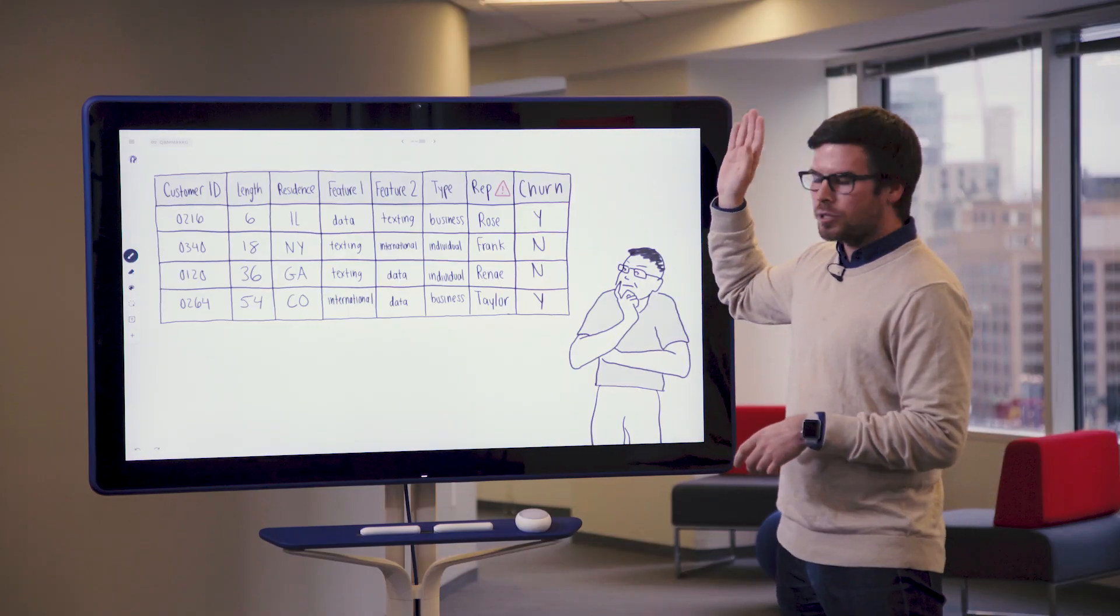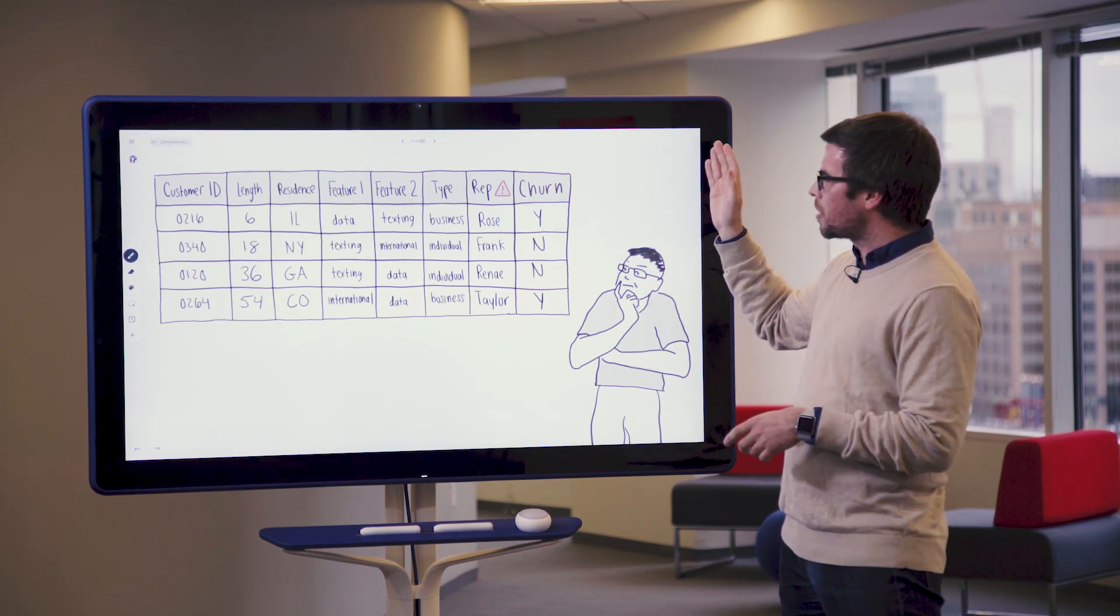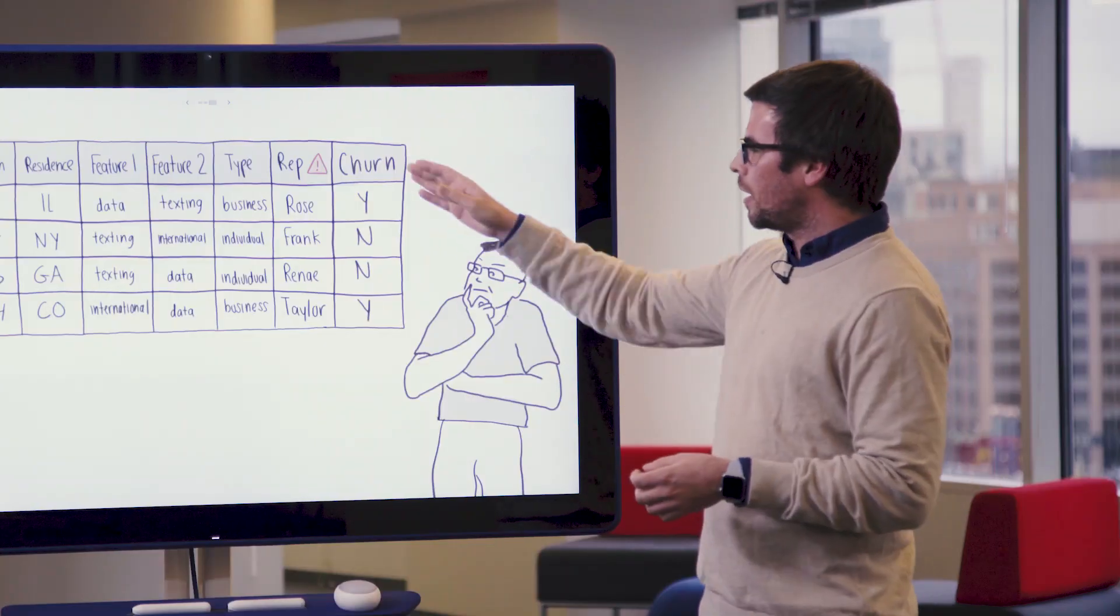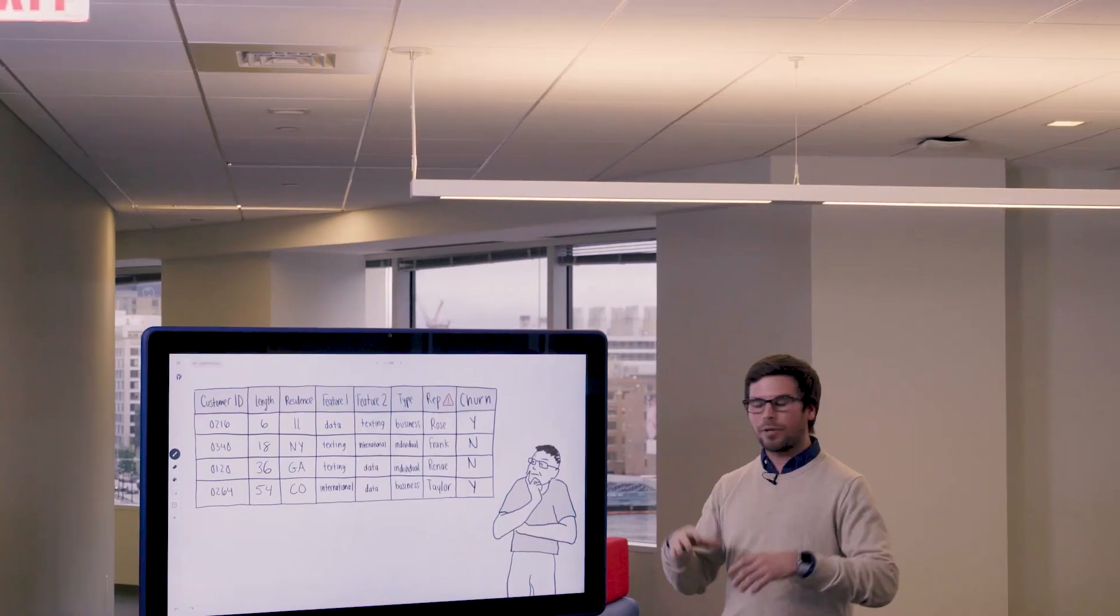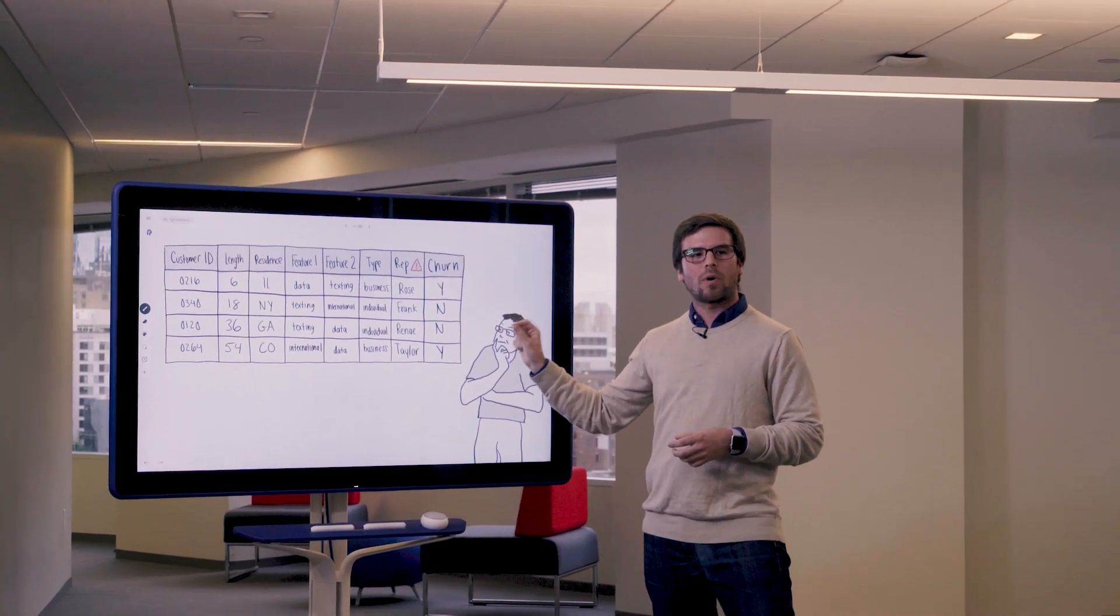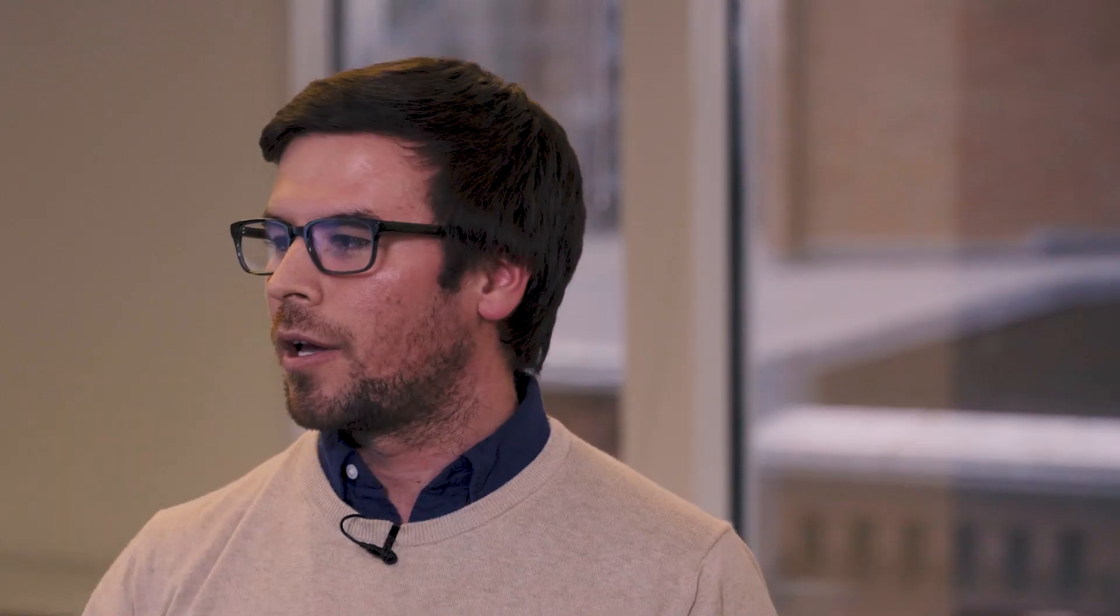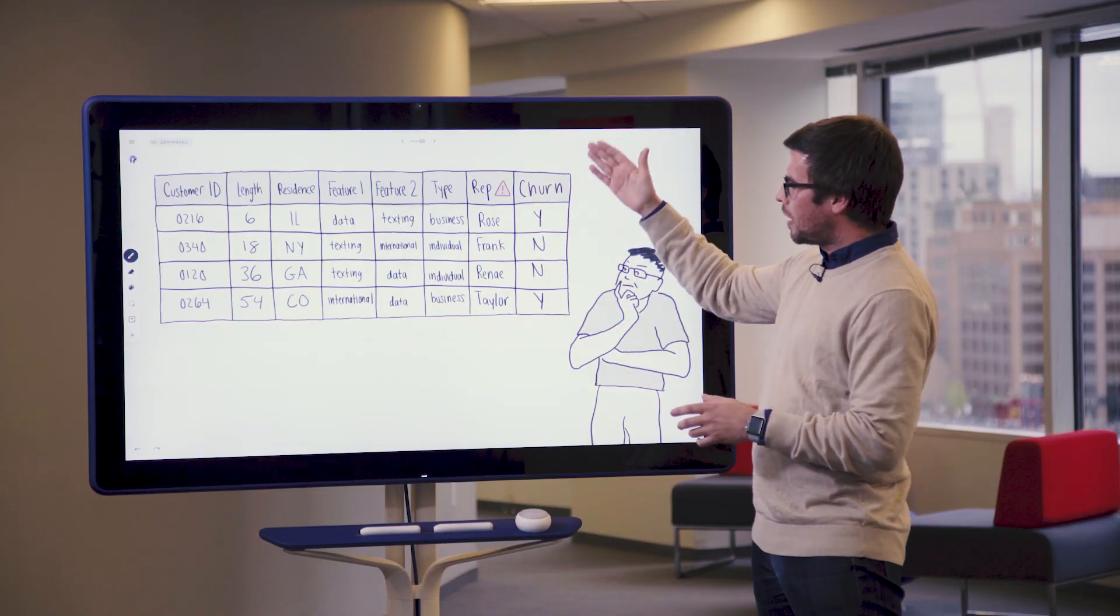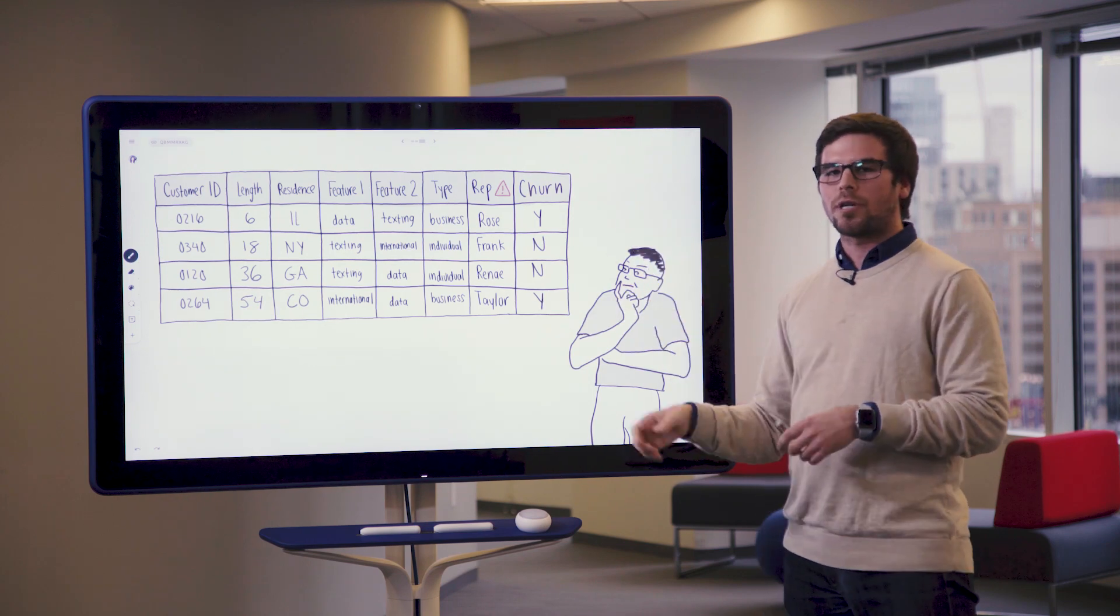Now the one that should cause some red flags and raise a bit of suspicion is this rep column here. This is the name of the last service rep that any one of these customers spoke to. Now it may seem innocent enough on the surface, however for this specific wireless communications company, they route all of their retention calls through one department. Therefore there are a finite number of names that could appear as the last representative an individual customer spoke to.